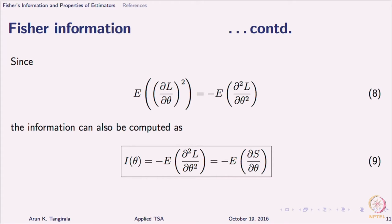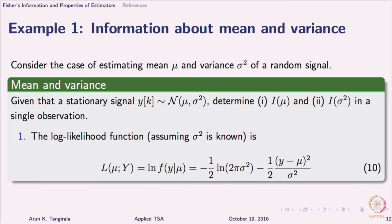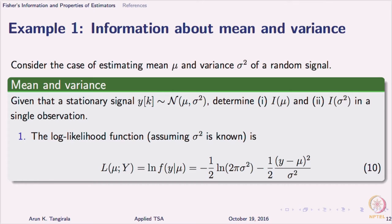You can think of Fisher's information as the average across the outcome space of whether there is a peak — whether there is a maximum or not — in the likelihood function. This is best understood with an example, so let us look at a very basic one.